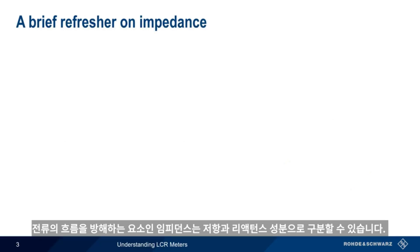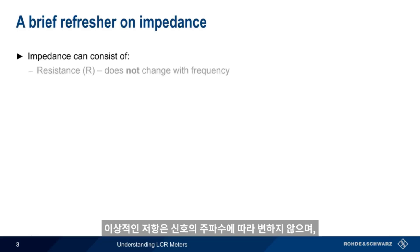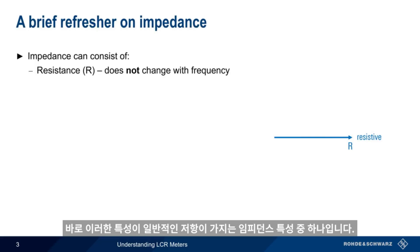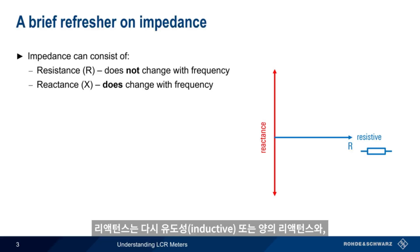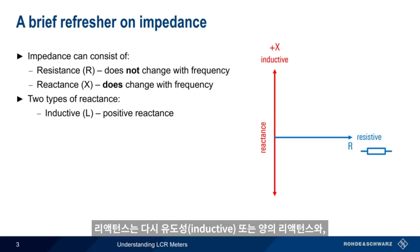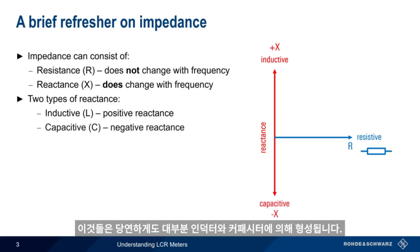Impedance, or the opposition to the flow of current, consists of resistance and/or reactance. An ideal resistance doesn't change with the frequency of the signal — this is the kind of impedance normally associated with resistors. The other type is reactance, where the opposition to the current or voltage does change as a function of frequency. Reactance can be further divided into inductive, or positive reactance, and capacitive, or negative reactance, most often created by inductors and capacitors.